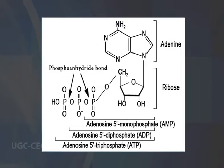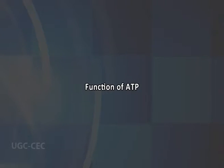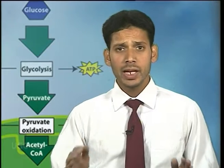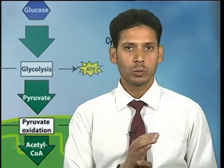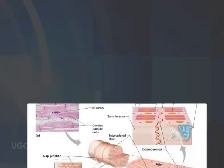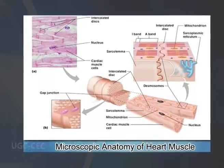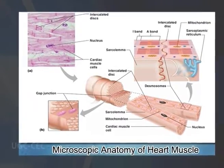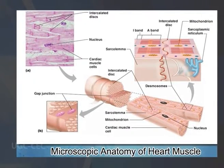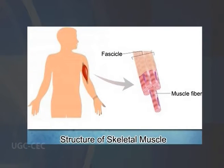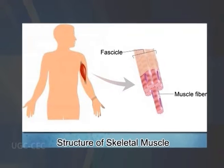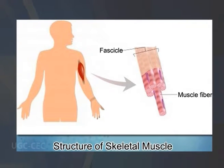ATP is used for many cell functions, including transport work — for example, moving substances across the cell membrane — and mechanical work, supplying energy needed for muscle contraction. It supplies energy not only to heart muscle for blood circulation and skeletal muscle for gross body movement, but also to chromosomes and flagella to enable them to carry out their many functions.